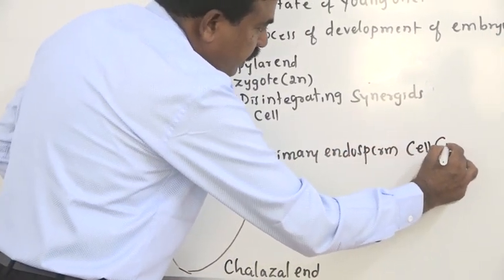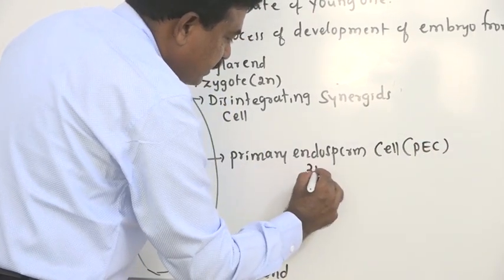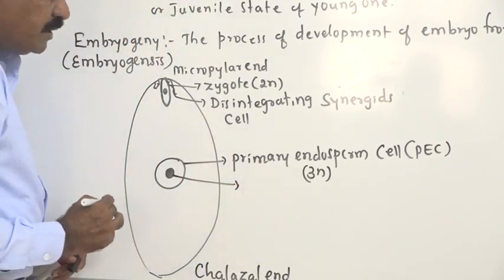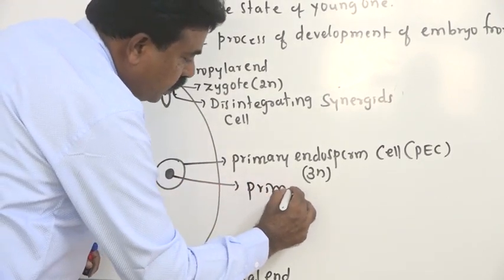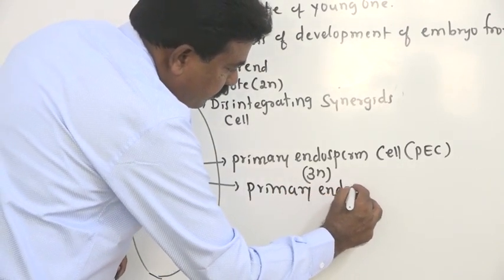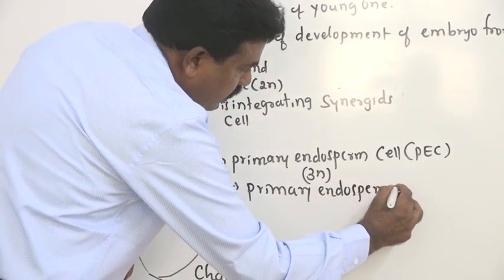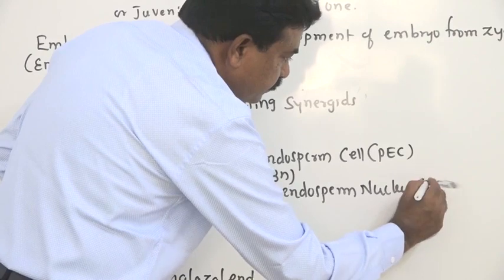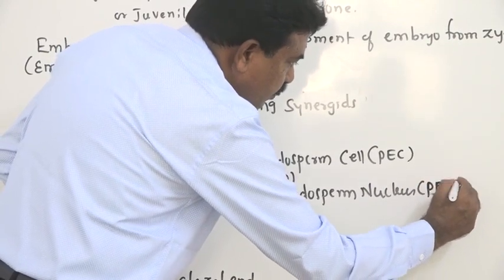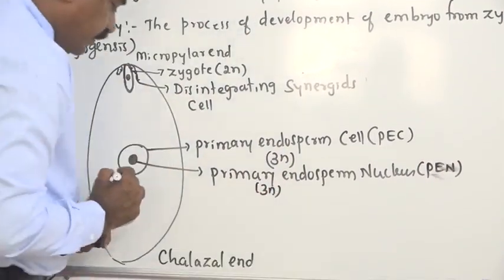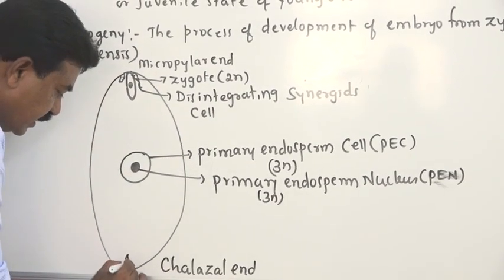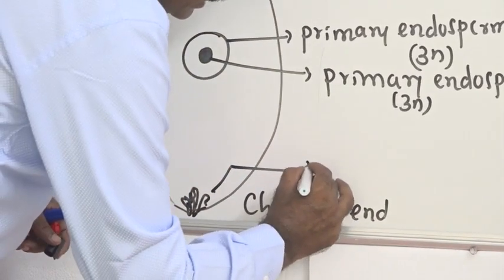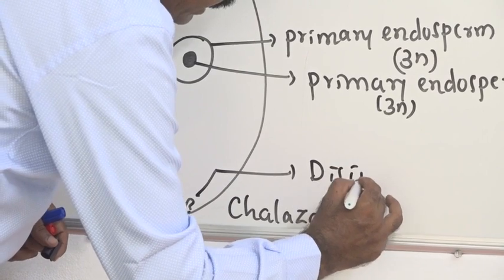The primary endosperm cell is triploid because it is formed in the triple fusion process, and its nucleus is called the primary endosperm nucleus — abbreviated as PEN. It is also triploid. Towards the chalazal end, three antipodal cells are present, and they are disintegrating.